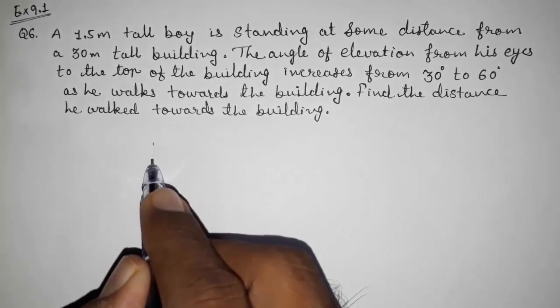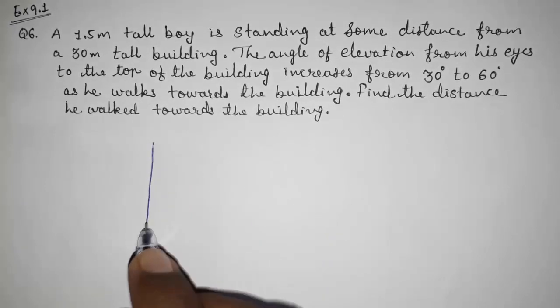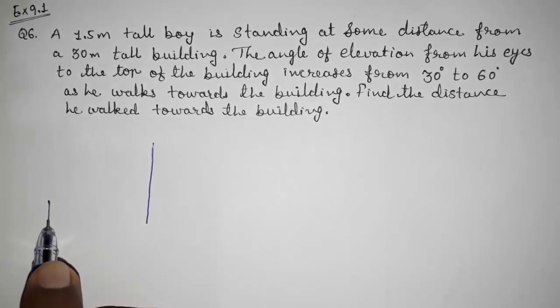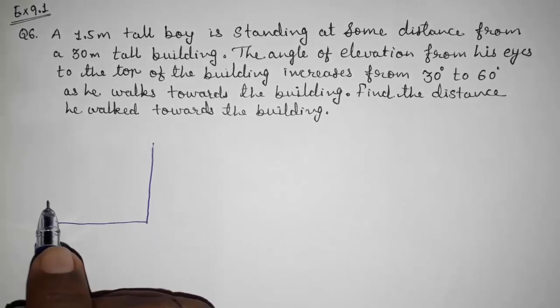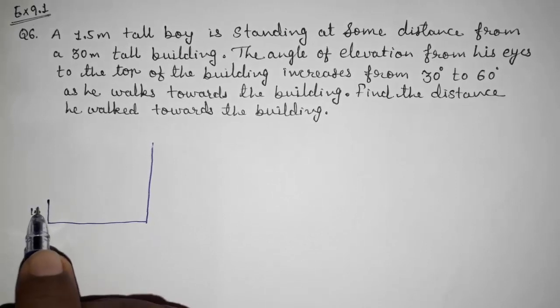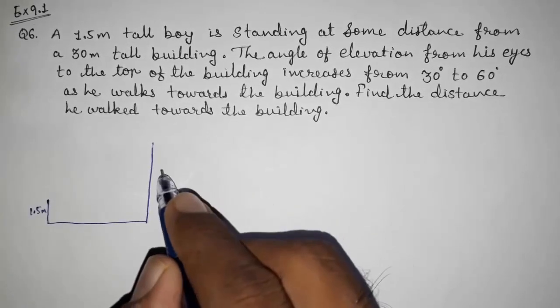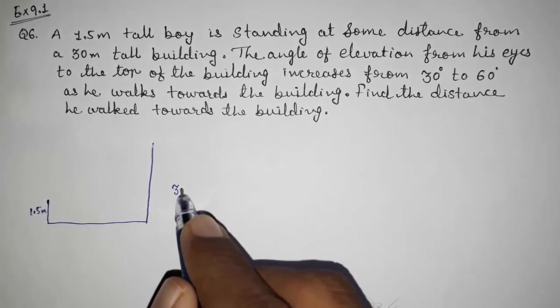So look here, I am drawing the figure. This is the building and this is the boy. This is the distance between the boy and the building. This is 1.5 meter and this total is 30 meter.